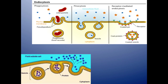Endocytosis and exocytosis are two other types of transport. Endocytosis means going into the cell; exocytosis means coming out of the cell. In endocytosis there are three types: phagocytosis, pinocytosis, and receptor-mediated endocytosis. Phagocytosis is how solid particles come into the cell. Pinocytosis is how liquid or fluid comes into the cell. Receptor-mediated endocytosis uses receptors on the cell surface to create a vesicle.